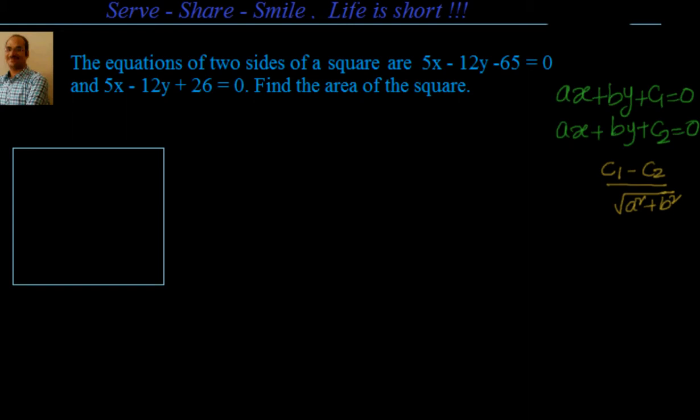Let's look at the equations of the sides. We have 5x minus 12y minus 65 equal to 0 and 5x minus 12y plus 26 equal to 0. Let these two sides be those. I'll write down here 5x minus 12y minus 65 equal to 0 and this side is 5x. The equation of this is 5x minus 12y plus 26 equal to 0.